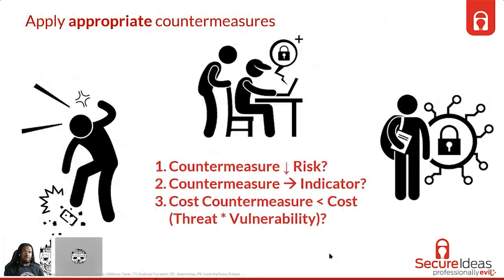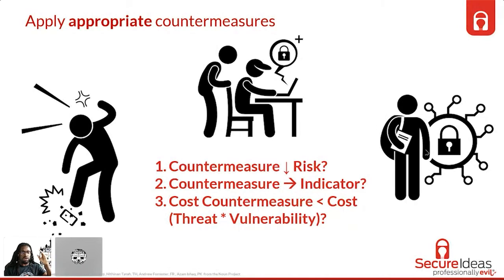Now we're on the final step: applying the appropriate countermeasures. Hopefully you've identified all your vulnerabilities and can now rate which ones to address by risk priority. The risk is the probability that a threat can exploit a vulnerability. So you prioritize: this is absolutely critical, it's a high chance it will be exploited, therefore we address it first because it's game over if the adversary gets hold of it. Lower risks we can be aware of, but we need to allocate resources to what's most critical.